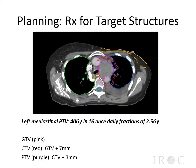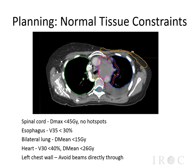Here is an example that we saw in your prior lecture on contouring. In this particular case, the GTV or gross tumor volume is highlighted in pink, the CTV in red, and the PTV in purple. The prescription details that the left mediastinal PTV should receive 40 gray in 16 once-daily fractions of 2.5 gray. In addition to detailing the prescription dose and fractionation, normal tissue constraints also need to be detailed. The normal tissues listed include the spinal cord, esophagus, bilateral lung, heart, and left chest wall. The instructions include both maximum, mean, volumetric, and general instructions.